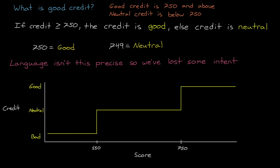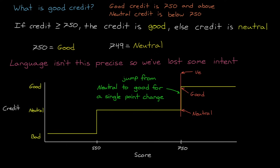Not only are we saying that improving your credit score by one point will somehow make your risk factor jump from neutral to good, which seems like a drastic change for a single point. But we're also claiming that there is an agreed upon definition of what good credit means, which just isn't true. A score of 750 might be considered good, very good, or neutral to different people, or in our case to different bankers. So if we want to encode the knowledge of the banking industry as a whole, we need to take into account the fuzziness or the impreciseness of language in our logical rules. And since binary logic isn't sufficient, this is where fuzzy logic comes in.